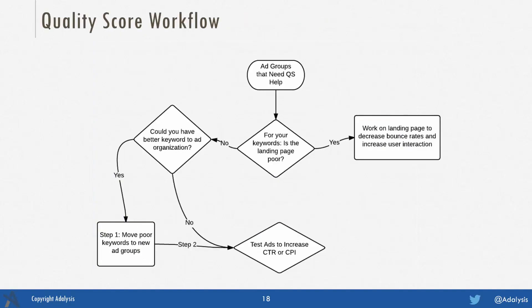For the quality score workflow: step one is to identify what ad groups need quality score help. For those ad groups, ask whether the landing page is poor — if yes, work on the landing page to decrease bounce back rates and increase user interaction. If the landing page is good, look at organization: could you have better keyword-to-ad organization, which generally shows up as below average ad relevance? If yes, move poor keywords to a new ad group, then test ads to increase CTR or conversion by impression. If the landing page is good and organization is good, then it's ad testing. Most ad group quality score improvements come down to good landing pages, good organization, and then ad testing.